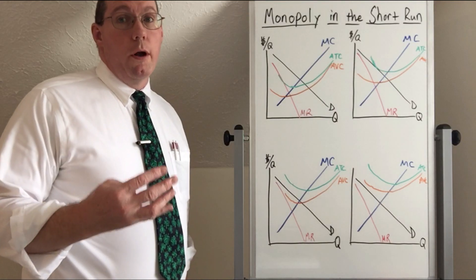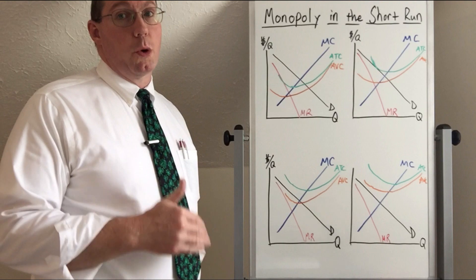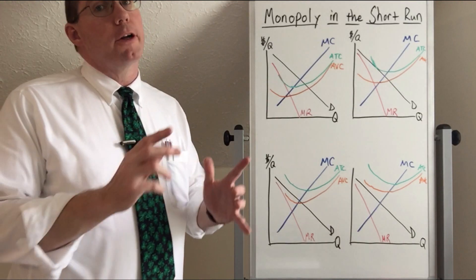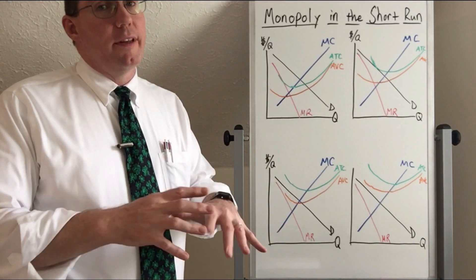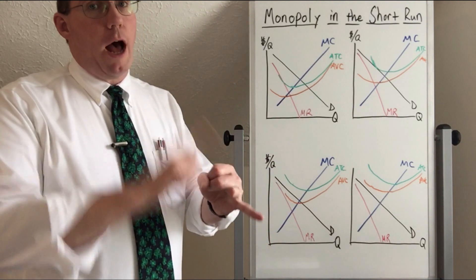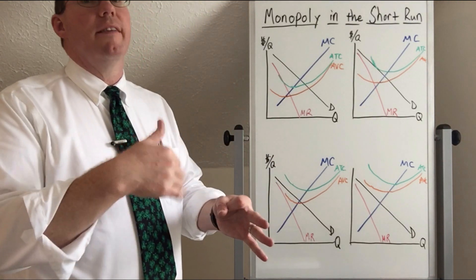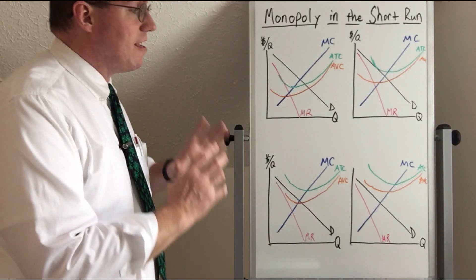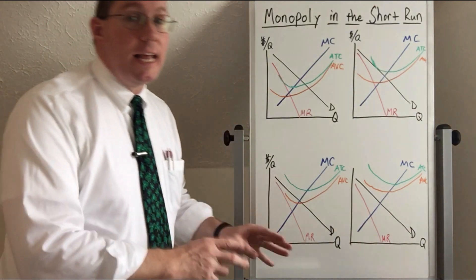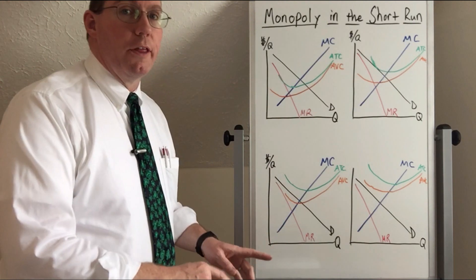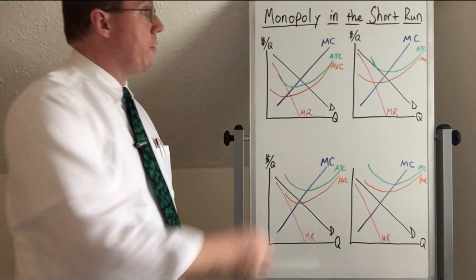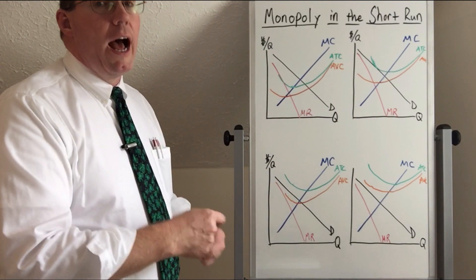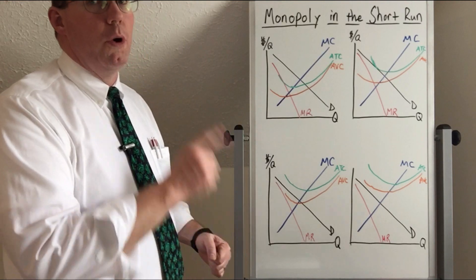Let's look at the four possible situations for a monopoly in the short run. You have already seen these because when we first learned about market structure graphs, we did an entire video just on shutdown, operating at a loss, and profiting. And then we did another shorter video on zero economic profit or breaking even. All we're doing right here is reviewing something you've already learned — I'm just showing you how it applies to the monopoly.